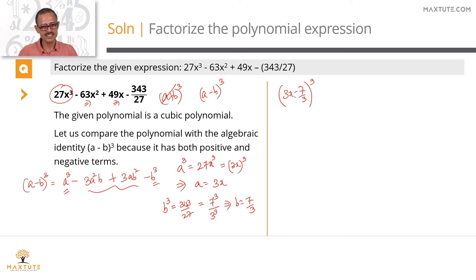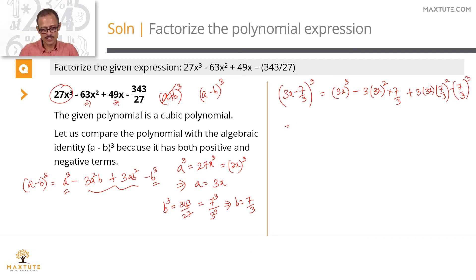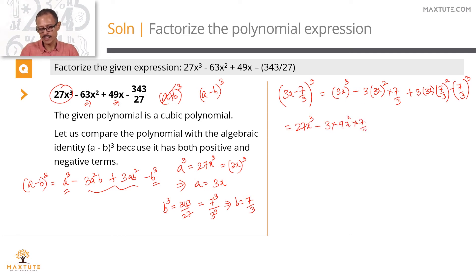We'll do both methods. In this slide, let's start from the factorized form. We are assuming (3x - 7/3)³ to be the answer; let's check out whether it maps with the original. (3x - 7/3)³ = (3x)³ - 3·(3x)²·(7/3) + 3·(3x)·(7/3)² - (7/3)³. The first term is 27x³ — no problem there, that's why we arrived at a = 3x. The second term is 3 into (3x)² which can be written as 9x², times 7/3. So we expand further: plus 3·(3x)·(49/9) minus 343/27.